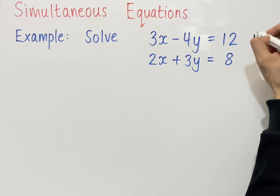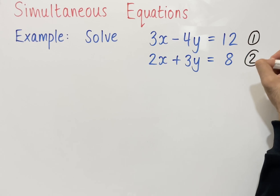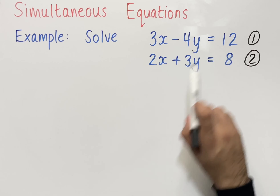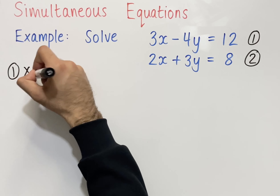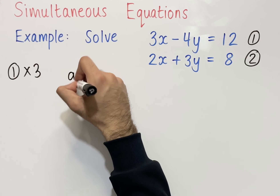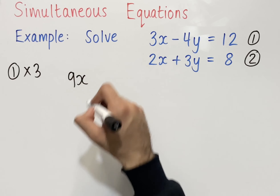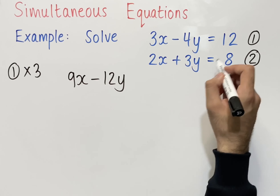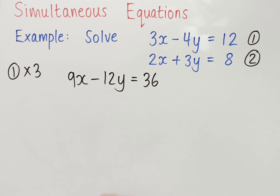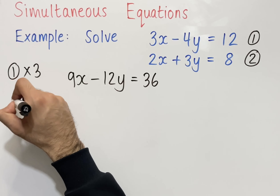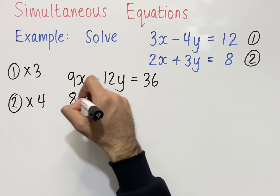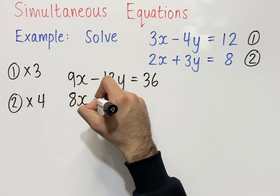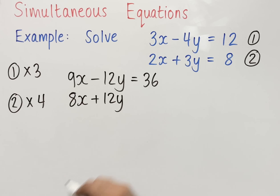To get 12y in the first equation, we multiply everything by 3. So equation 1 multiplied by 3 gives: 3x times 3 is 9x, minus 4y times 3 is minus 12y, and 12 times 3 is 36. To get 12y in the second equation, we multiply everything by 4. So equation 2 multiplied by 4 gives: 2x times 4 is 8x, plus 3y times 4 is plus 12y, and 8 times 4 is 32.